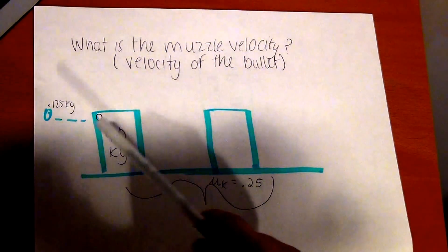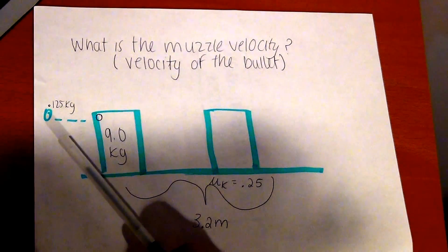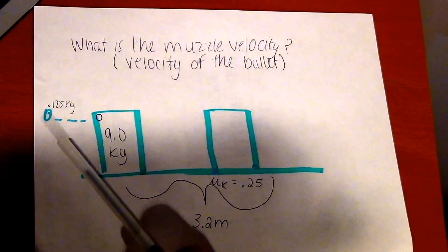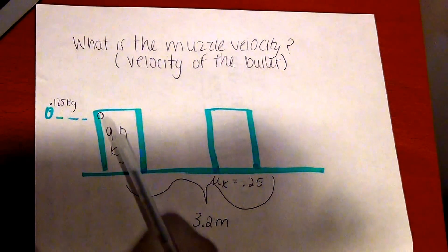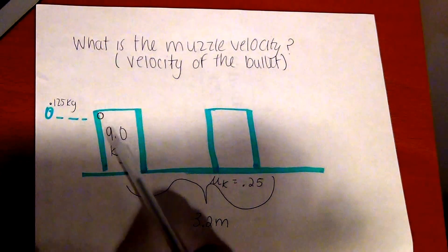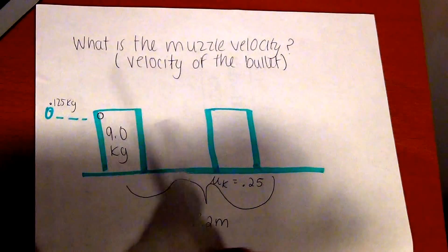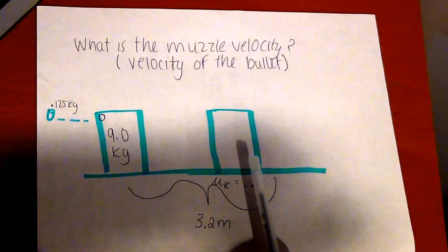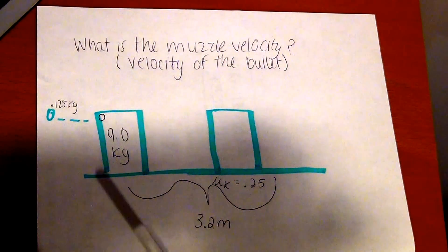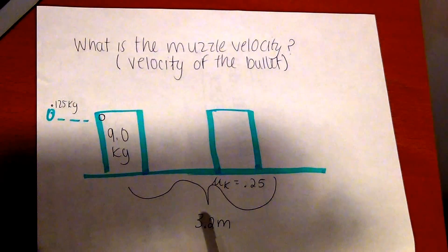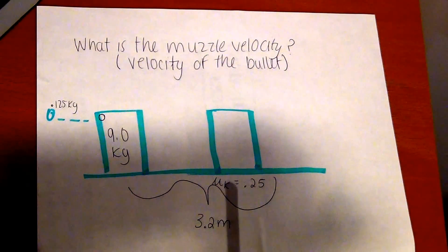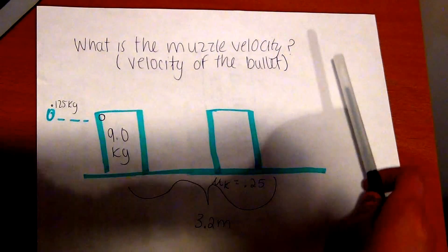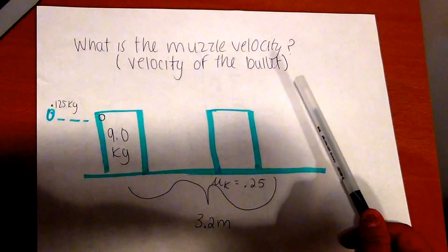Here's a picture of the problem. This is a bullet that weighs 0.125 kilograms traveling toward a block which weighs 9.0 kilograms. This is the initial position of the block and this is the final position of the block. The distance between these two is 3.2 meters, and mu equals 0.25. The problem is: what is the muzzle velocity or the velocity of the bullet?